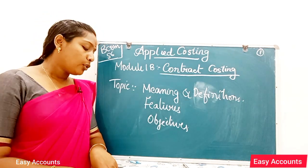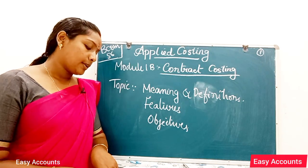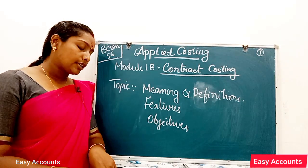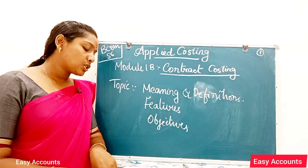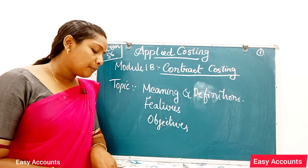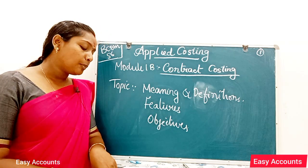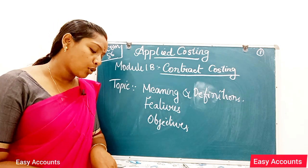For cost plus contracts: under a cost plus contract, the contract price depends on the cost incurred, and a percentage is charged for administrative expenses and profit.